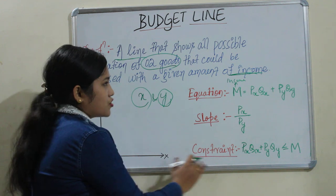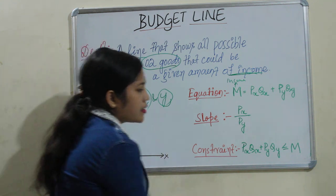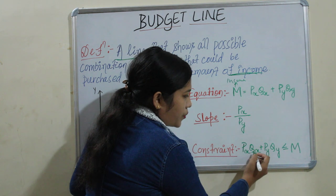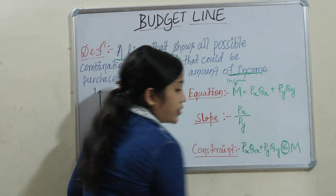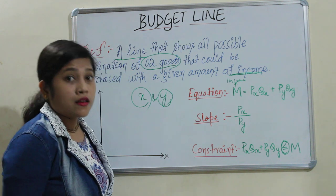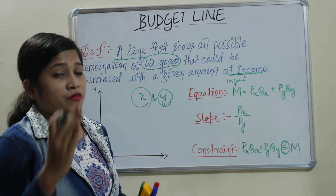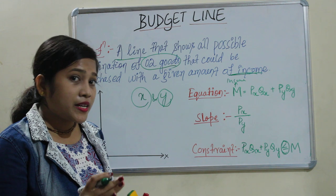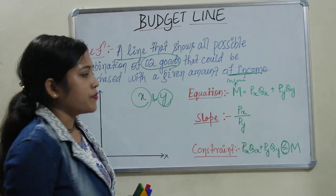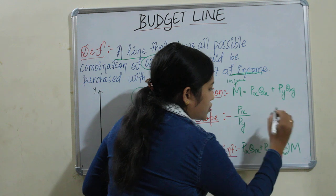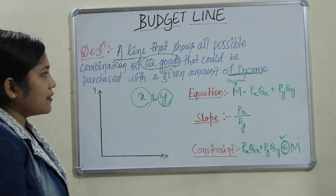Next is constraint. What is the limitation? The limitation is: Px·Qx + Py·Qy should be less than or equal to M. That means whatever expenditure we are doing should be less than or equal to our money income. So these are the properties we have to follow.